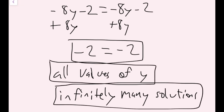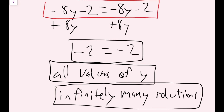This is true anytime you see something like this: negative 2 equals negative 2, 0 equals 0, 10 equals 10 — any number that equals itself. Also, if you got down to y equals y, that would be the same case. Notice that we had the exact same terms on both sides from the start — negative 8y and negative 2 on both sides — so you could technically jump right to 'infinitely many solutions.'